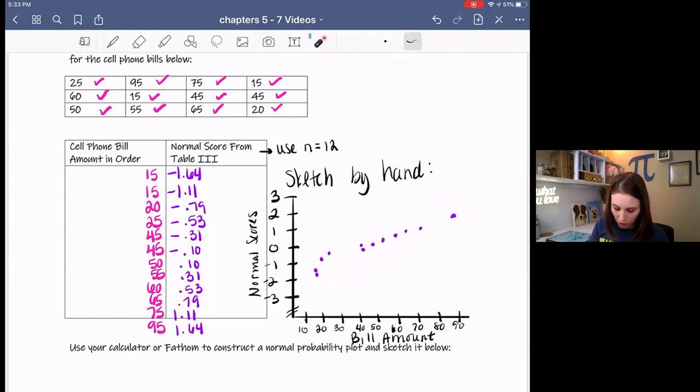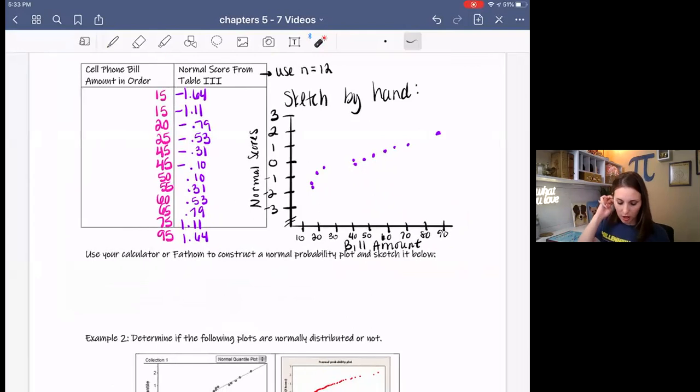You can also use your calculator to just kind of check that. So I want you to practice that. Go ahead and pause it, try it either on your calculator or Fathom, just so you can practice using those tools and see if it matches this. Pause it, come back, and we'll share. If you did it on your calculator, it should look very similar to what we drew or sketched in the graph.